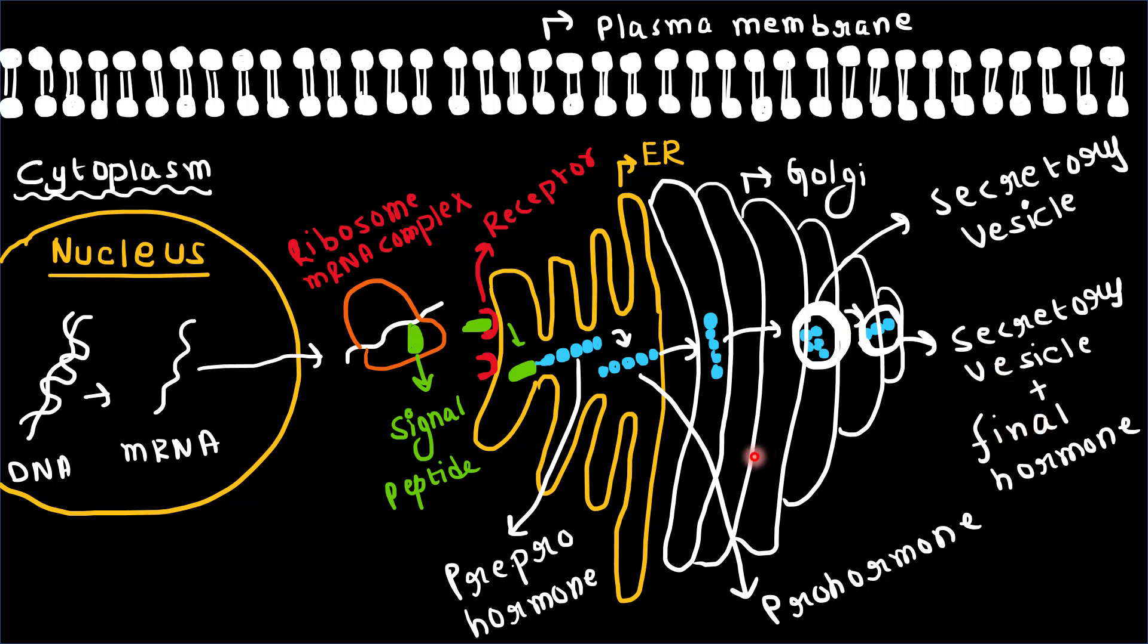Other functions of the Golgi apparatus include glycosylation and phosphorylation of the hormone. The final hormone is stored in secretory vesicles until the endocrine cell is stimulated.